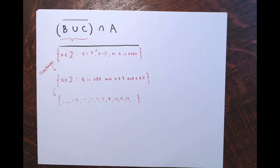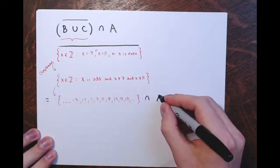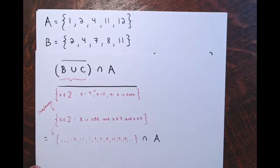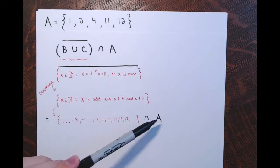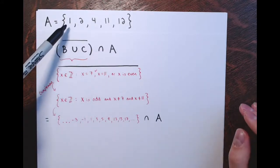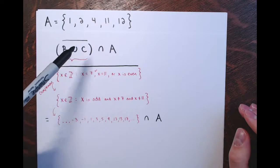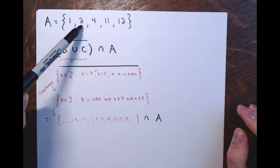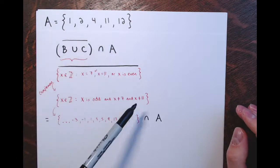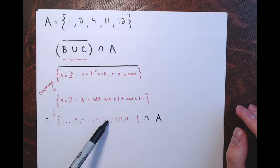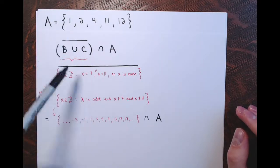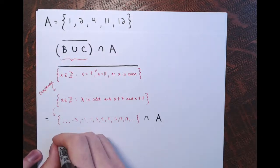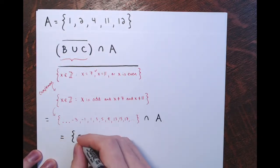Now intersect this complement set with set A = {1, 2, 4, 11, 12}. Check each element: 1 is odd and not 7 or 11, so yes; 2 and 4 are even, so no; 12 is even, so no; 11 is excluded from the complement set, so no. The only element in both sets is 1. After all that work, the answer is simply {1}.